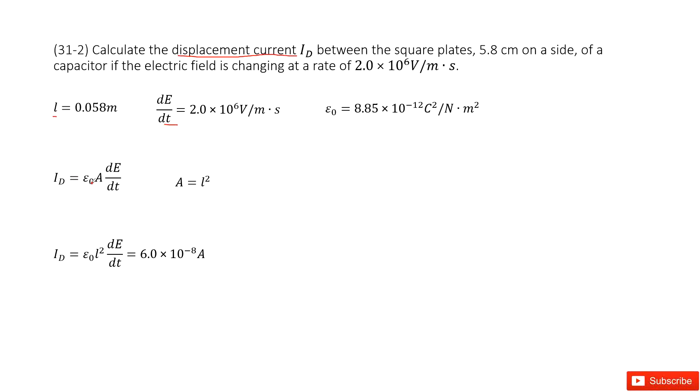We can see ε₀ is a constant, 8.85 × 10⁻¹² C²/N·m². You can check the textbook. And A is the cross-sectional area, so it's L squared, side length squared.